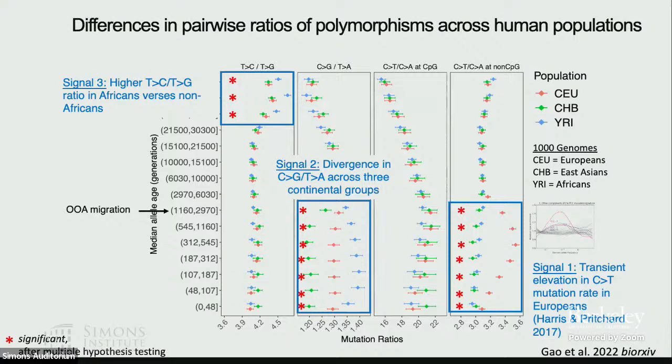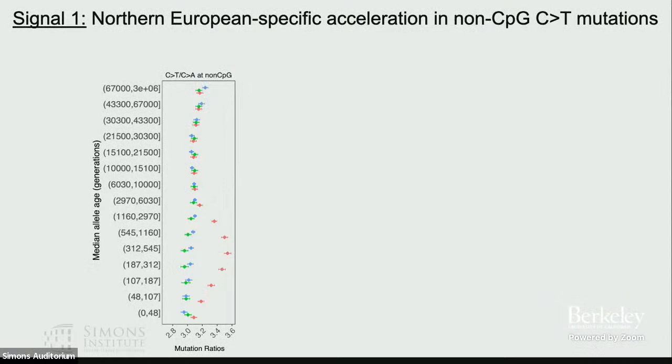Interestingly, whatever causes the C-to-G to T-to-A divergence is still ongoing because the differences are present even in the most recent time bin. For the TCC mutation, whatever the causes were are no longer active such that all human populations now have the same rates. We also find a third signal present at T-to-C to T-to-G mutations at very old mutations that predate the out-of-Africa migration, suggesting these mutations arose in the common ancestors of all modern humans, yet our analysis detects some differences.